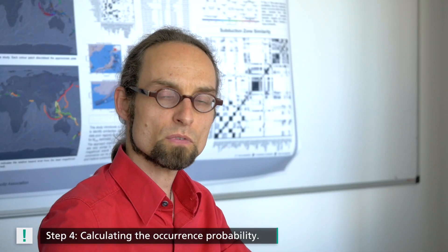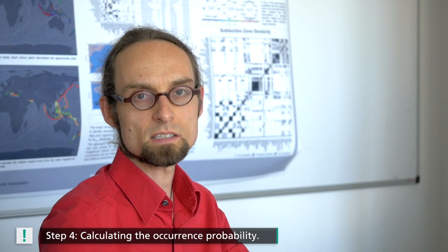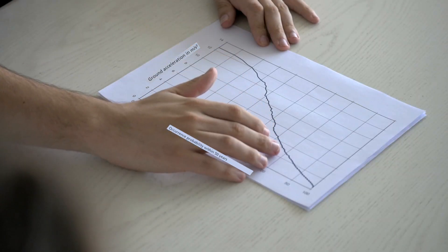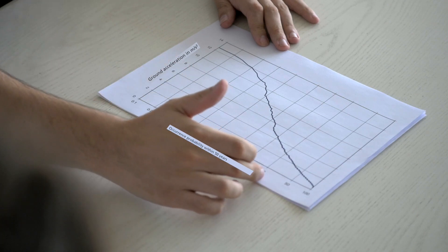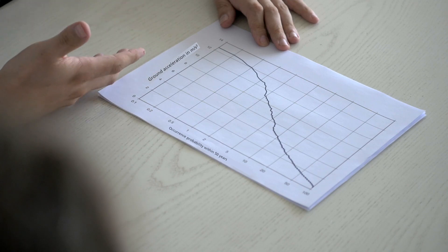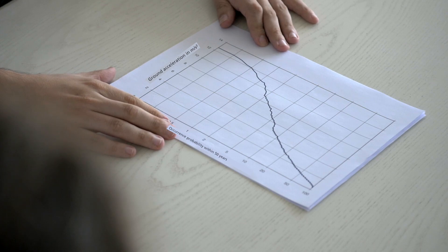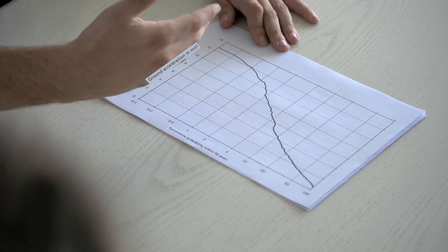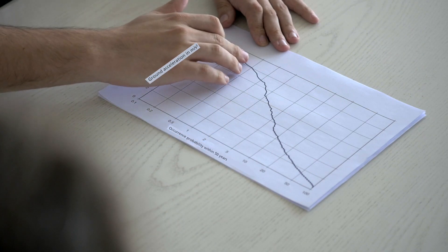We now know approximately how often which magnitudes occur in central Chile and we are aware of the impact on ground motion. We can now summarize all this in the calculation of the occurrence probability of an earthquake. This gives a hazard curve for a particular location. Let's take Santiago de Chile. On the y-axis we have the ground acceleration and on the x-axis the occurrence probability, calculated with the assumption that earthquakes occur randomly with a Poisson distribution. Very small earthquakes occur very frequently, causing minimal ground motion, while major ground motions of strong quakes are significantly rarer. Such curves are calculated nationwide and presented in the form of a map.